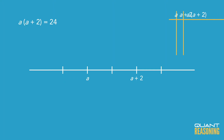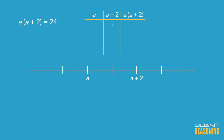And if it doesn't immediately come to you, you could even just start from the bottom of the number line. Like 1 times 3? No, that's too small. 2 times 4? Still not 24. 3 times 5? No. 4 times 6? Bingo.